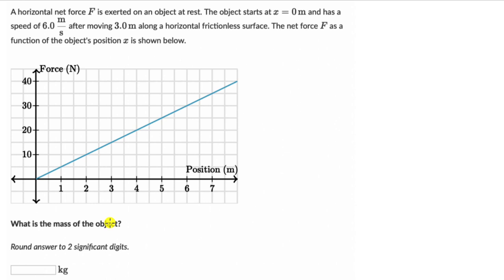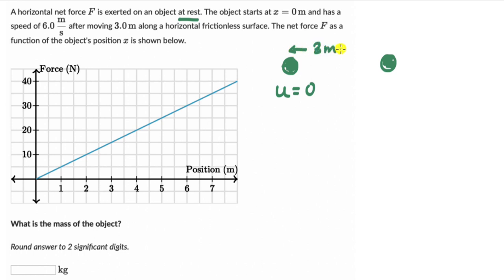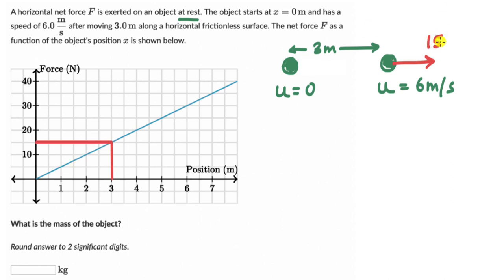Let's list down the pieces of information we know. The object is initially at rest, so initial speed is 0. After moving 3 meters, the speed is 6 meters per second. There is also a force acting on the object which is constantly increasing. From the graph, when the object is at a position of 3 meters, the force is 15 N.